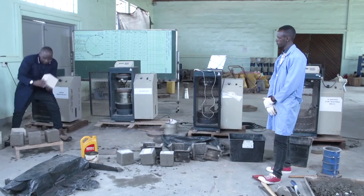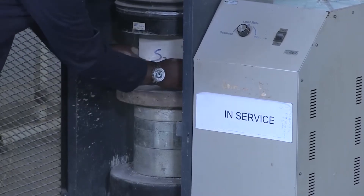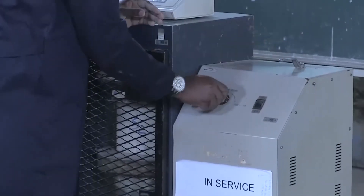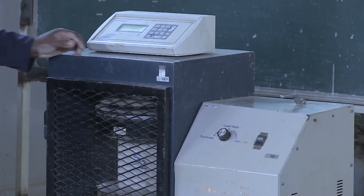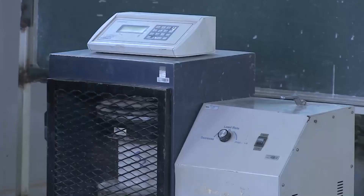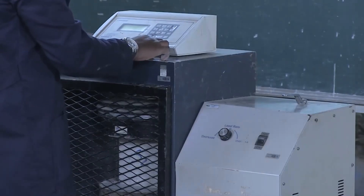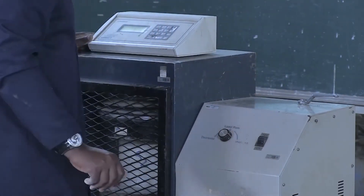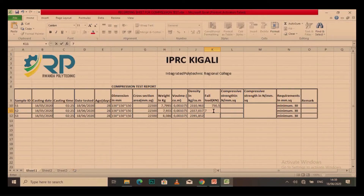We open and remove sample 1 from the machine. Then we take the second sample, S2, and place it in the machine the same way. We close for safety, load the machine, and run it. We start the test and wait — we don't rush, because the machine itself is testing. We get the value: 761.1 kN.